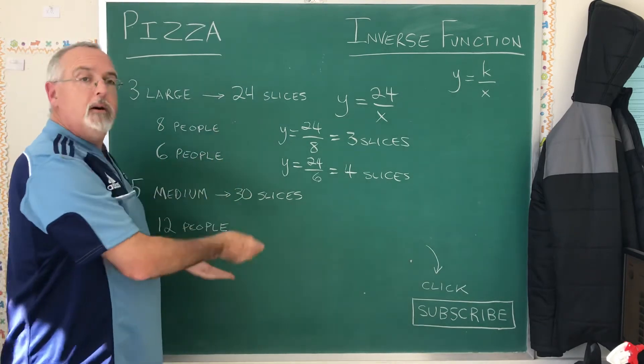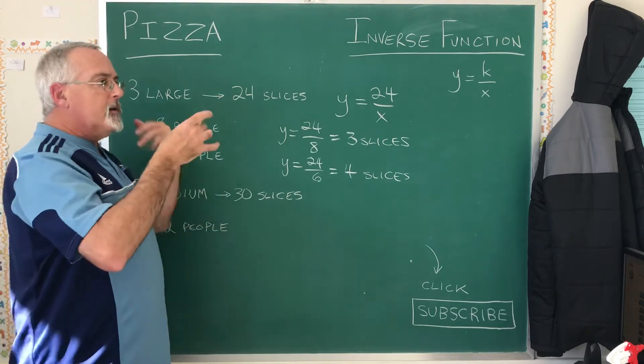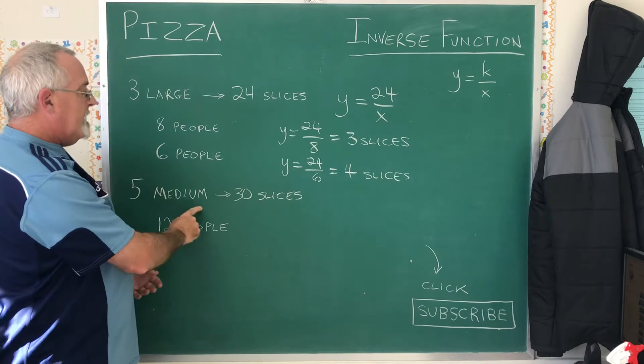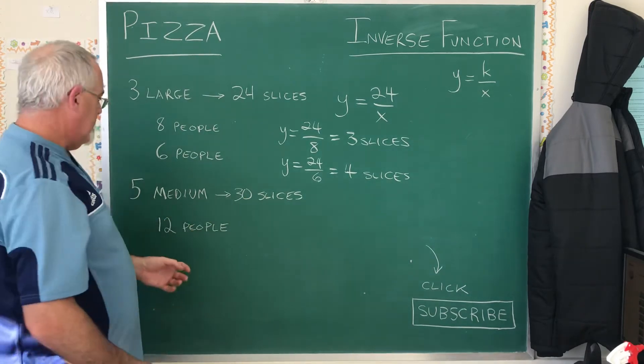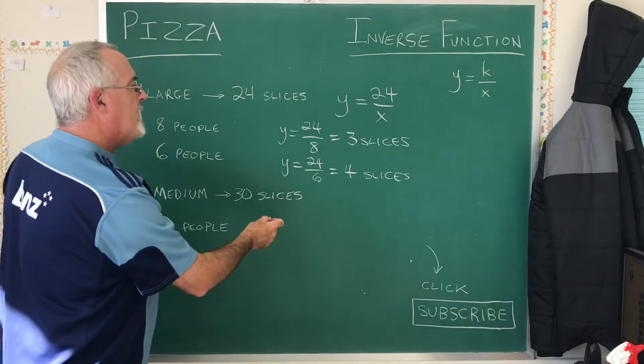And then, of course, what if it's more complicated? What if you have a weird number of slices or a weird number of people, and it's not so easy to do it in your head? Well, how about when we have five medium pizzas for a total of 30 slices and 12 people are going to eat? How many slices does each person get? Let's try it.